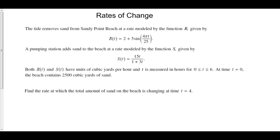Find the rate at which the total amount of sand on the beach is changing at time t equals 4. We want to find a rate of change — the rate at which the sand on the beach is changing. If we look at our functions given, these are both rates of change. R is the rate at which sand is being removed from the beach, and s is the rate at which sand is being added to the beach. The units of both r and s are in terms of cubic yards per hour, which is a rate of change. So these are actually the functions we want to use.